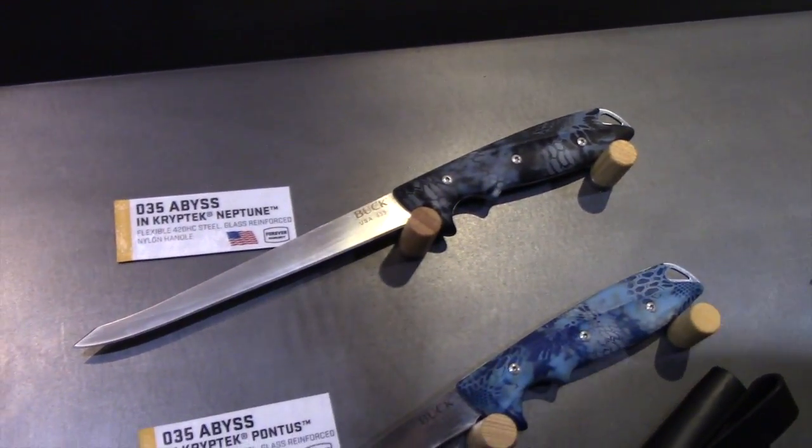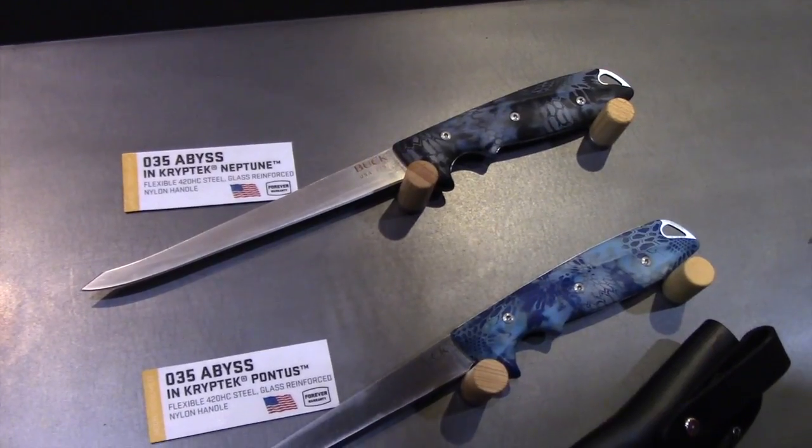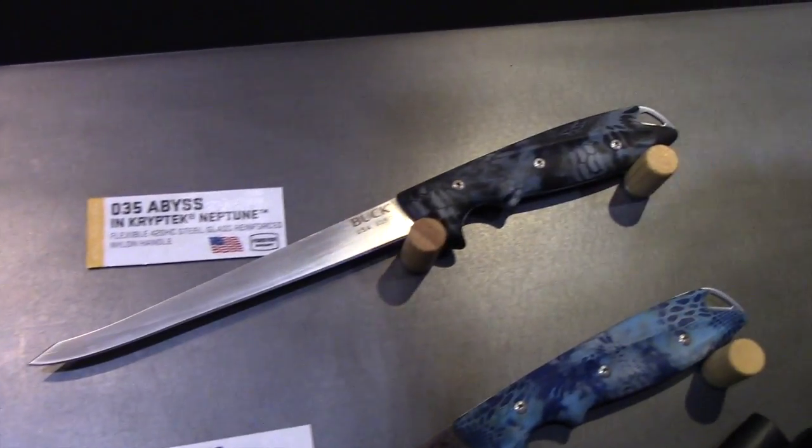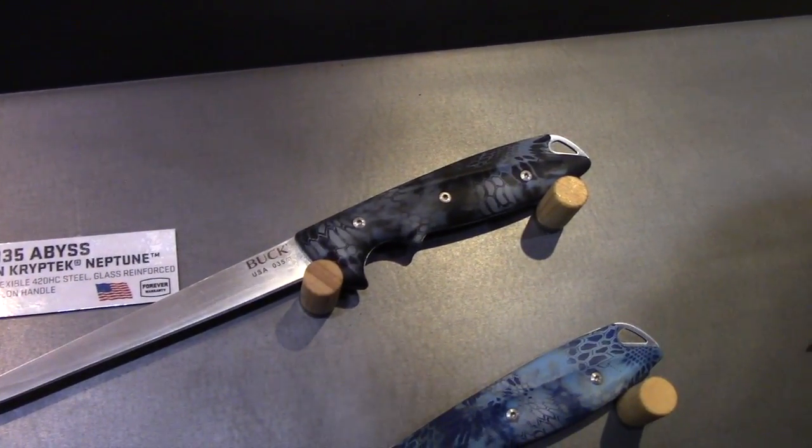Moving on to some domestically made Buck product. This is our Abyss series. We have two different camo options: the Cryptec Neptune and the Cryptec Pontus.